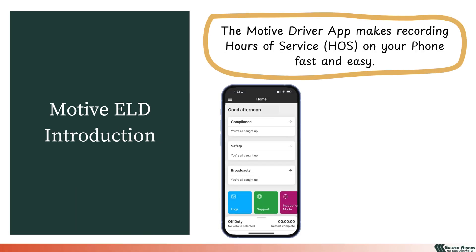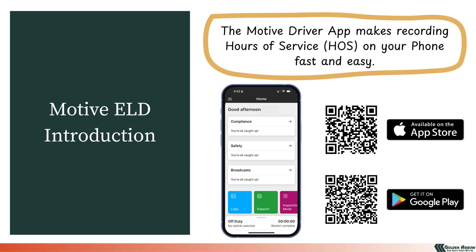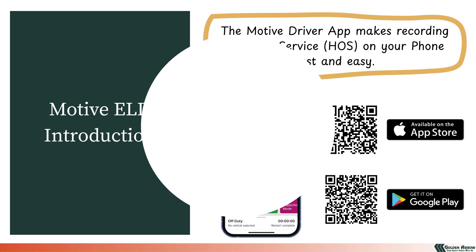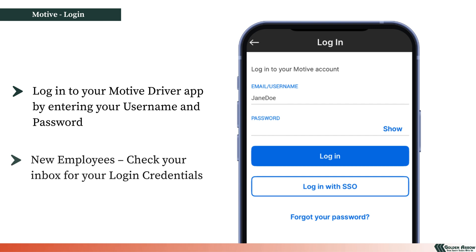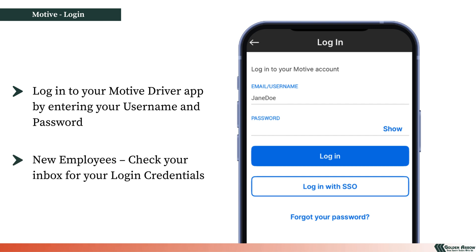The Motive Driver app makes recording your hours of service fast and easy, right from your phone. To get started, download the Driver app on your iOS or Android device by scanning the QR codes displayed on the screen. Once installed, log into your Motive Driver app by entering your username and password. If you're a new employee, check your inbox for an email with your login credentials provided by your company.